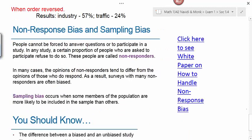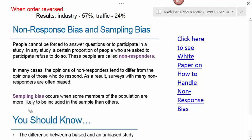Another significant type of bias, especially in qualitative surveys, is non-response bias and sampling bias. People cannot be forced to answer questions or participate in a study — those who refuse are called non-responders. The opinions of non-responders tend to differ from those who do respond, so surveys with many non-responders are often biased. Sampling bias occurs when some members of the population are more likely to be included in the sample than others, which is why you generally want to conduct two or three random samples and look at the average values.